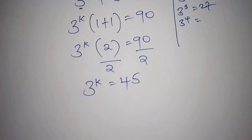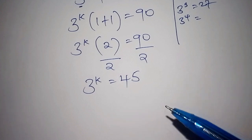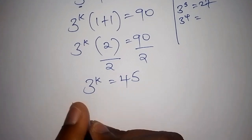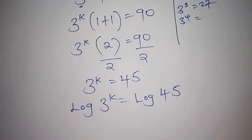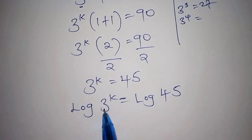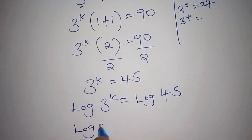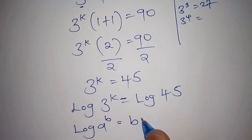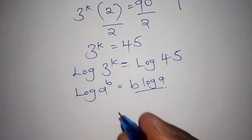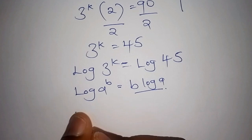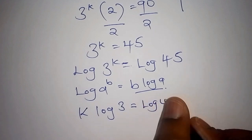Since we do not have a proper base that gives us 45 as a power of 3, we are forced to bring in logarithms. We take the log of both sides: log(3^k) = log(45). Using the rule that log(a^b) = b·log(a), this becomes k·log(3) = log(45).